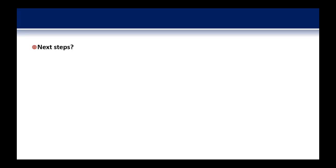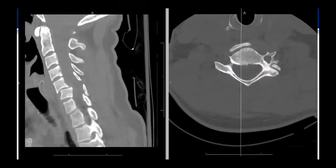What would be everyone's next steps after seeing this imaging and getting this exam? He's presented to the ER. These are his initial CT scan images. He has no other imaging, and he's neurologically intact.